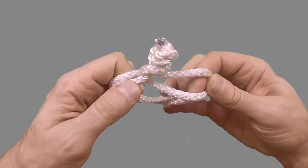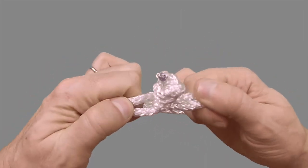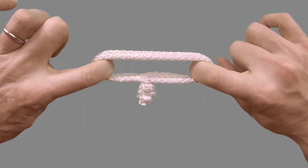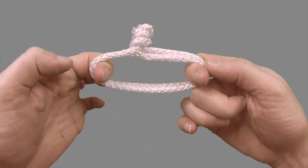So there you have it, one overhand knot and a simple locking technique to create your soft shackle out of your Dyneema loop.